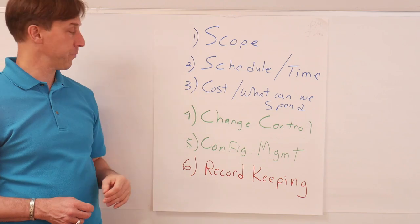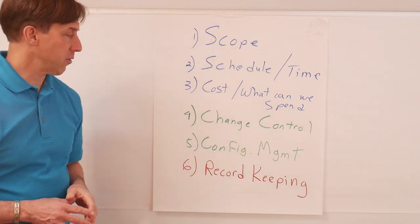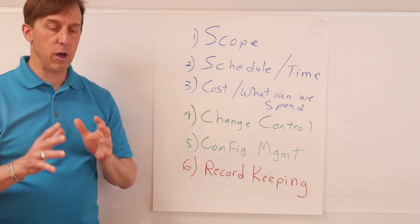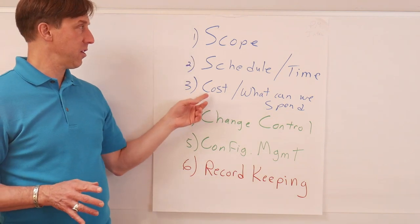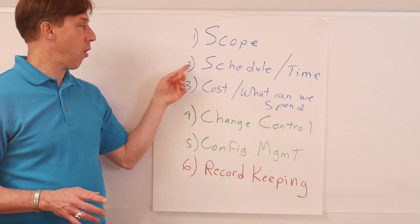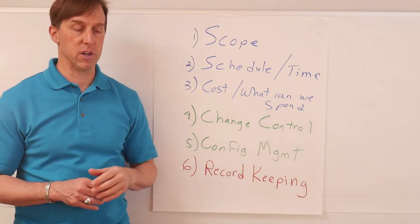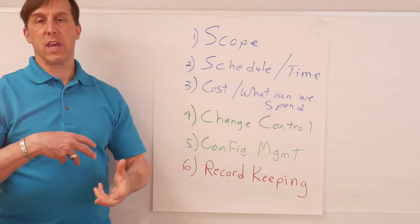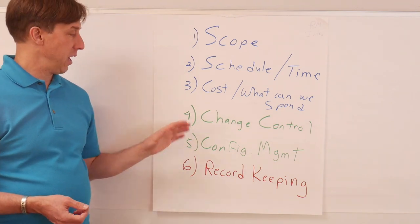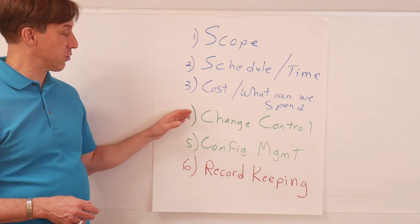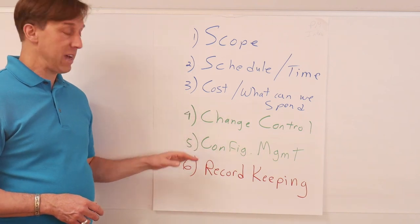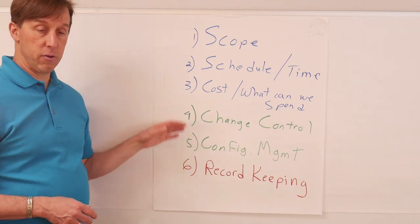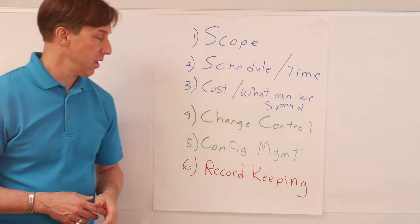As you go into cost, schedule, and scope, there are some other aspects that are going to help you achieve these - going on scope, on time, and then at cost or below cost. And that involves keeping the project organized. And those three items are change control, configuration management, and then record keeping. And they're really three separate items.